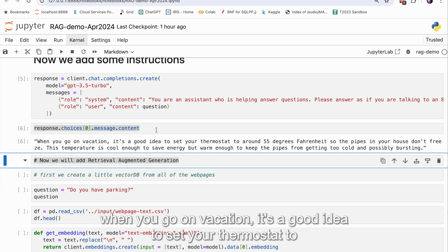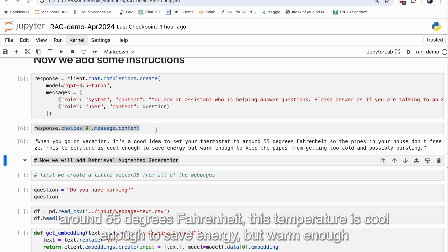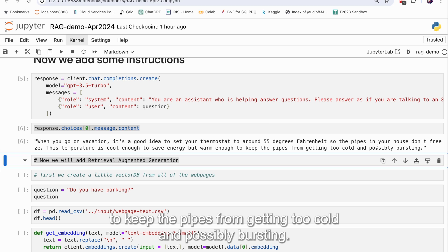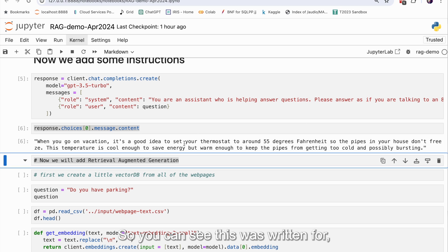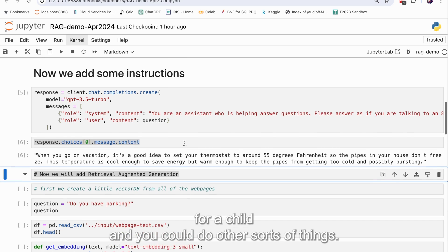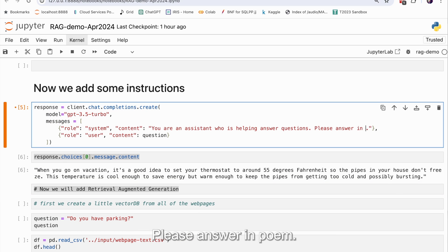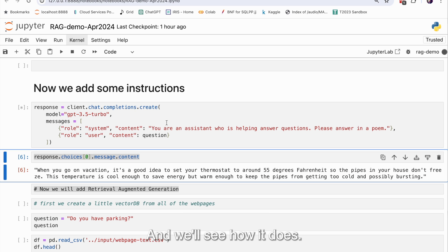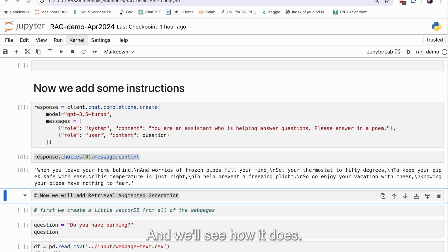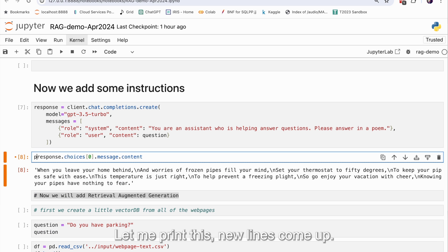when you go on vacation, it's a good idea to set your thermostat, this temperature is cool enough to save energy, but warm enough to keep the pipes from getting too cold and possibly burst. So you can see this was written for a child. And you could do other sorts of things. Please answer in a poem. And we'll see how it does. Actually, let me print this. New lines come out.